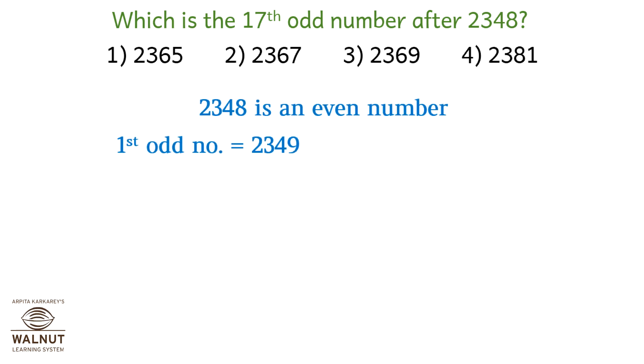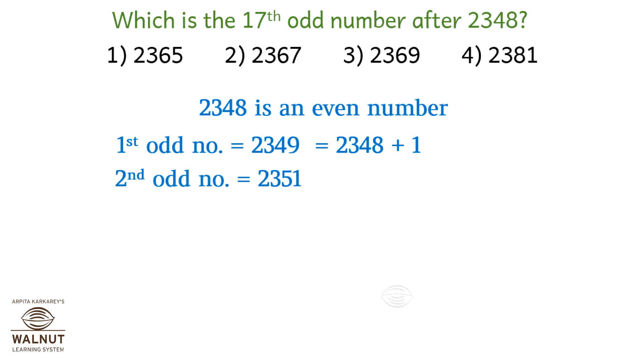So the first odd number after 2348 is 2349, which is 2348 plus 1. The second odd number is 2351.